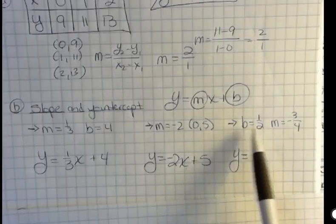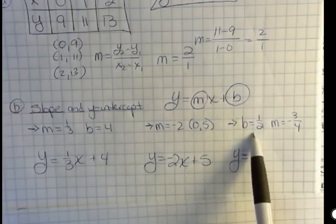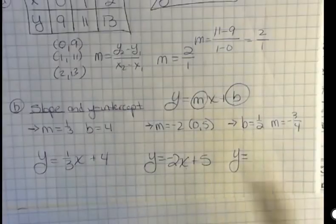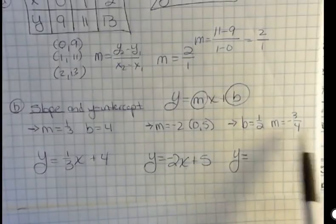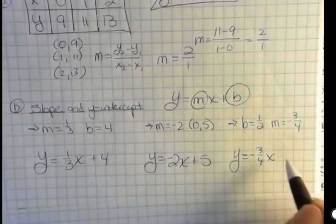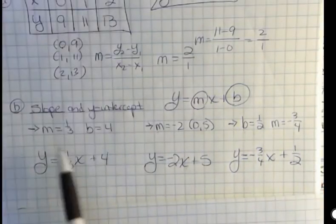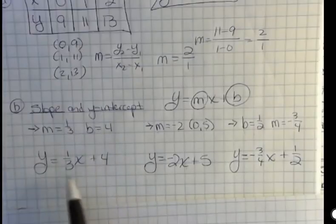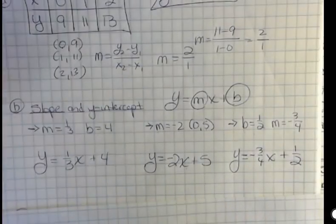Here, b is 1/2. That's the y-intercept. That goes at the end. It doesn't matter what order they give those to you. It still has to go at the end. Here, our slope is negative 3/4, and our y-intercept is 1/2. So if they give you the slope and the y-intercept, you just plug that directly into the formula. Not bad, right?